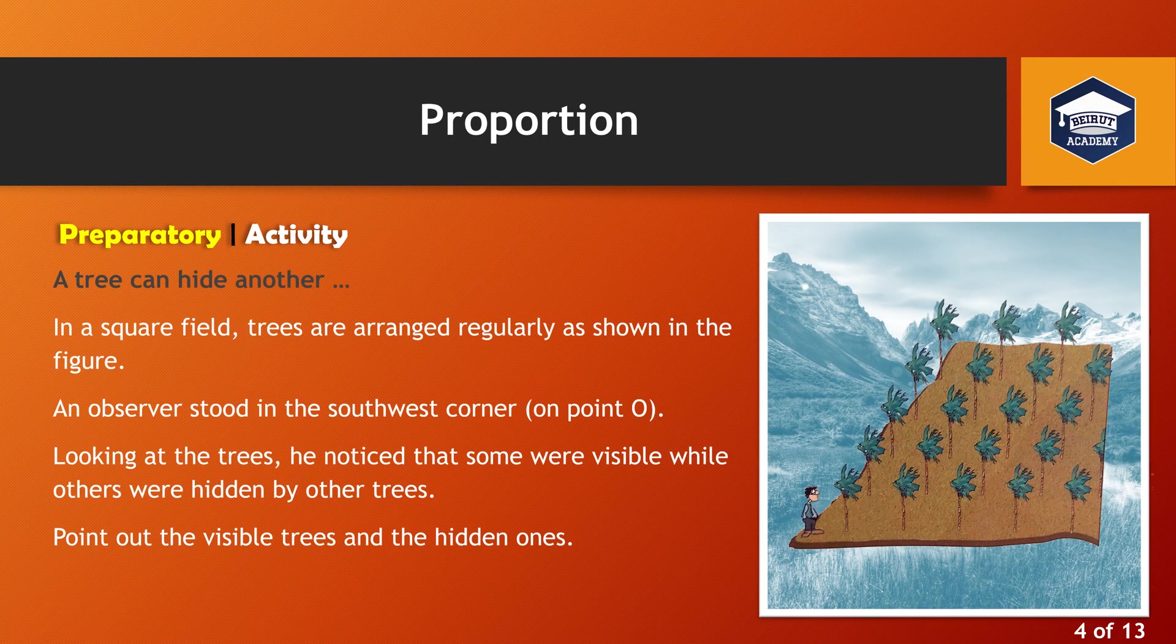A tree can hide another. In a square field, trees are arranged regularly as shown in the figure. An observer stood in the southwest corner looking at the trees. He noticed that some were visible while others were hidden by other trees. Point out the visible trees and the hidden ones.